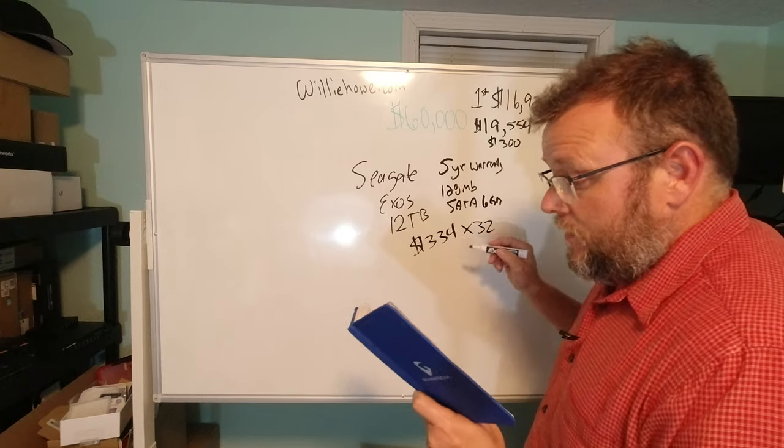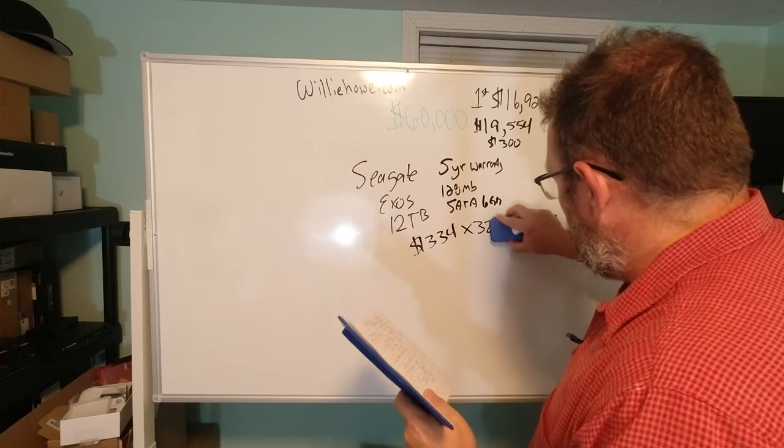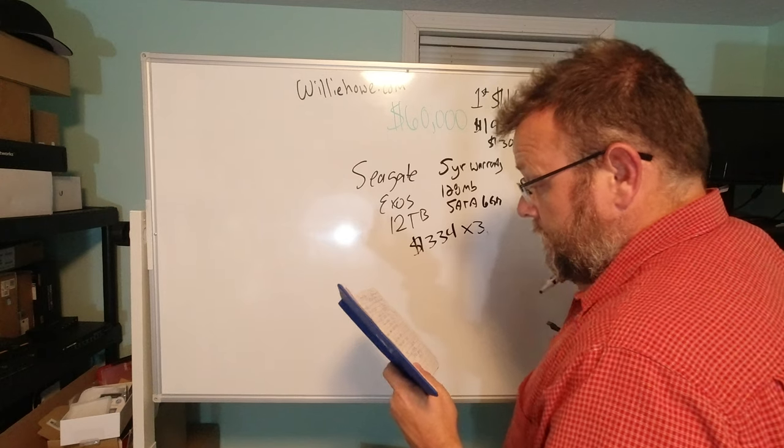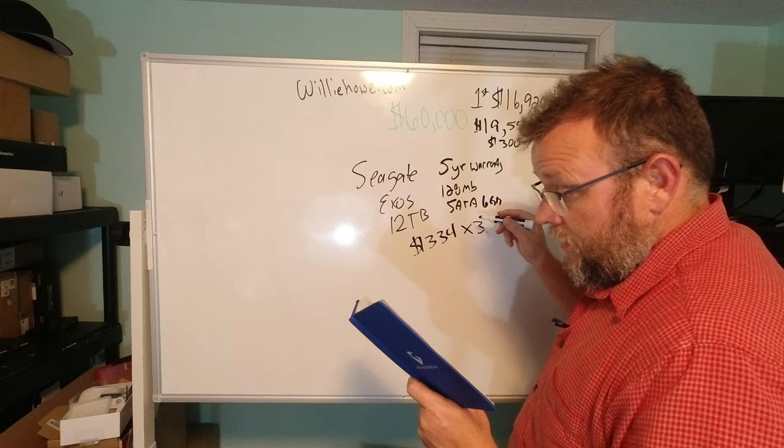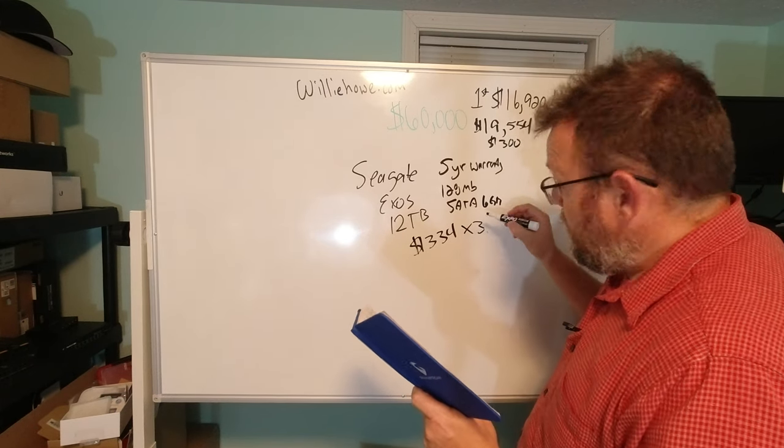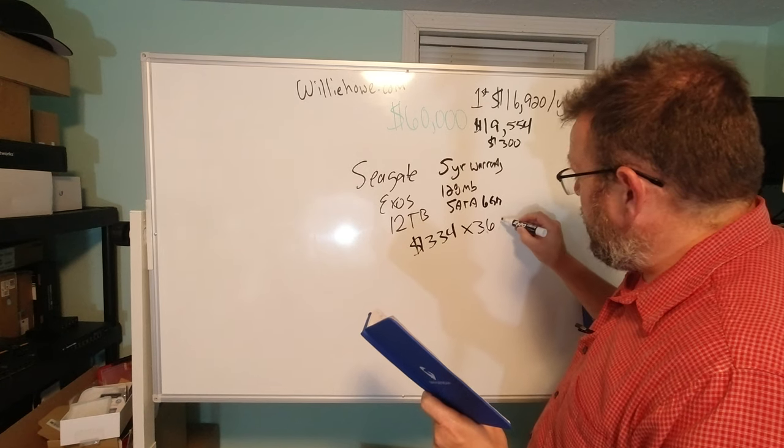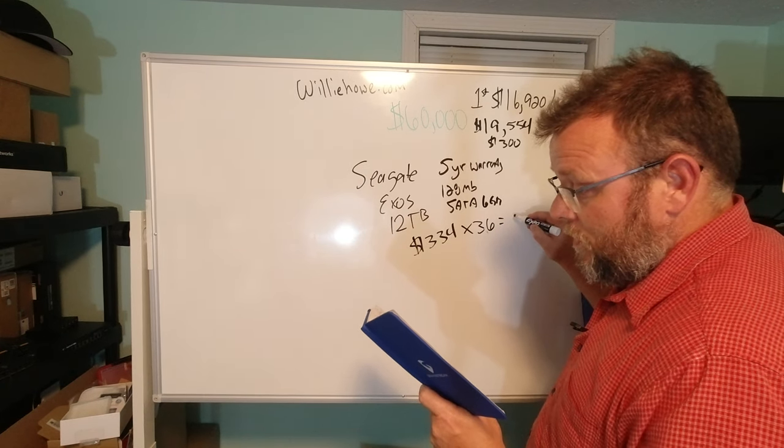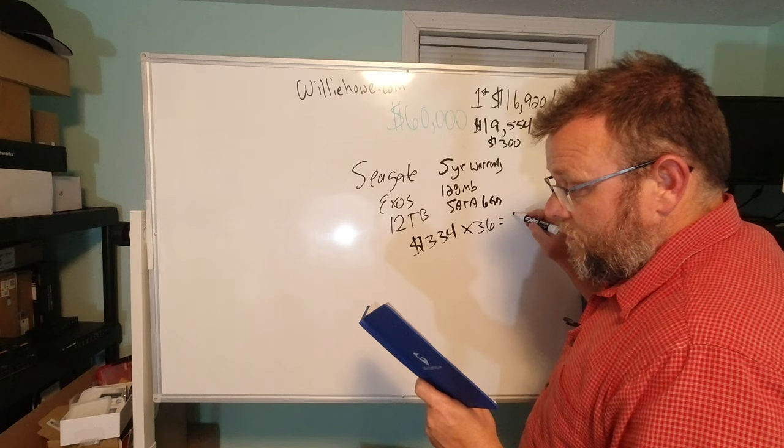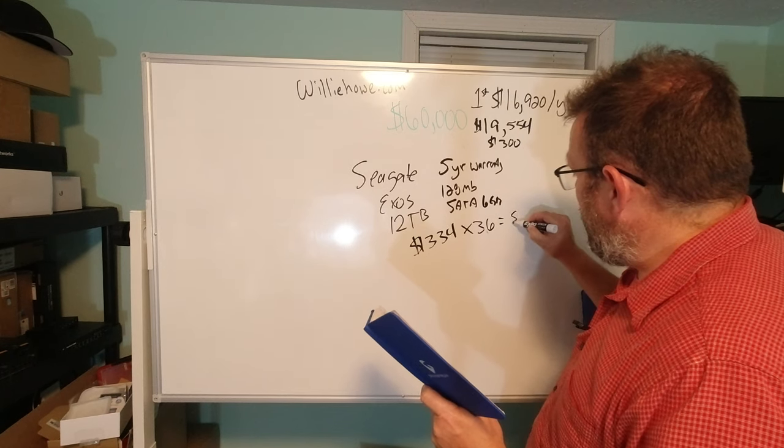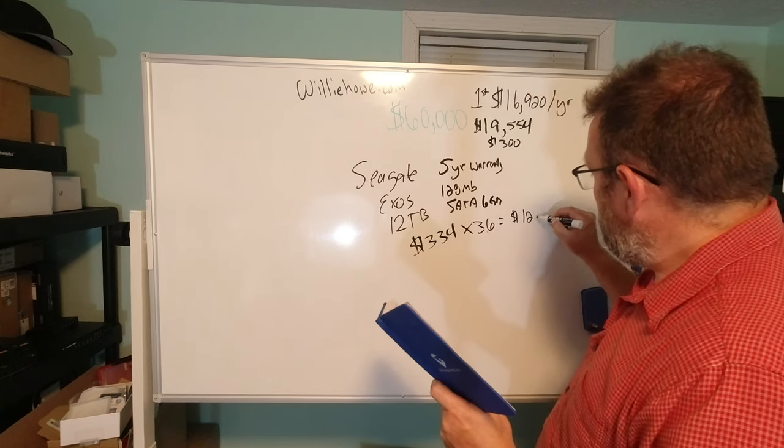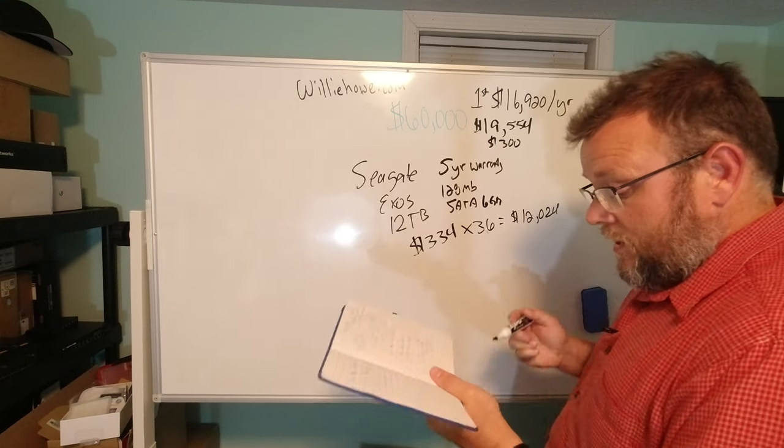So I'm going to need 32 of those, I'm sorry, I'm going to need 36 of those. And let's see what that total comes out to. It should come out to like $12,000, $24, something like that. Double-check the math on that.